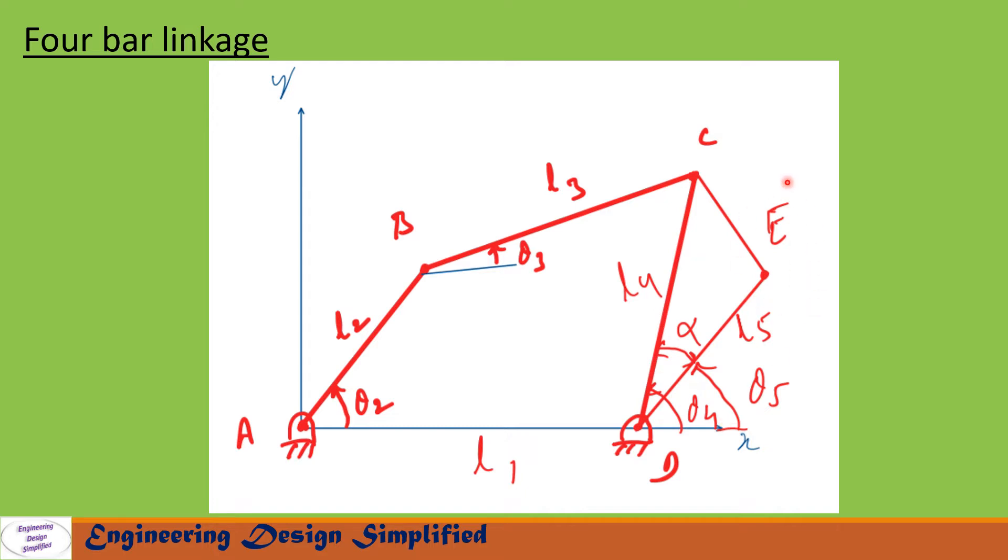This point is a point on the follower link and this length we call L5 and angle between DE and BC is alpha.